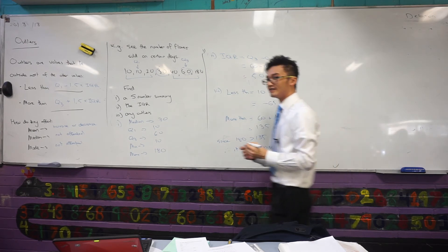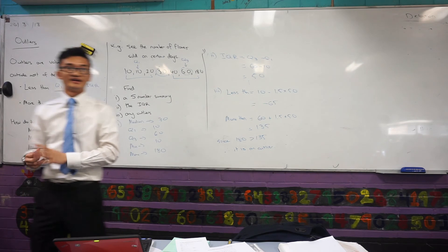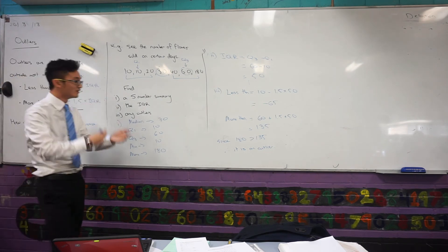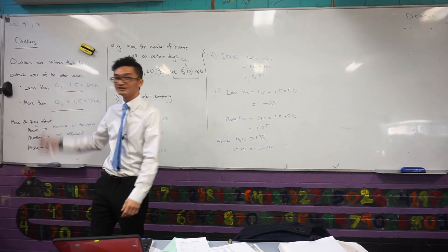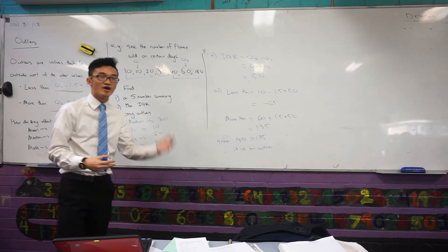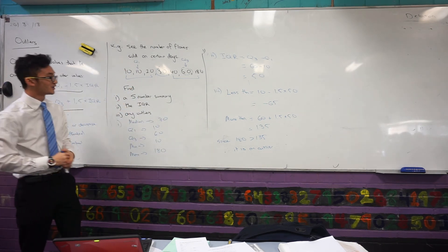So it's really important when we're looking at this idea of outliers in mathematics, we're not just saying it's a really big number or it's a really small number. We want to come back to these definitions to identify whether they are actually outliers or not. Can you copy that down for me?